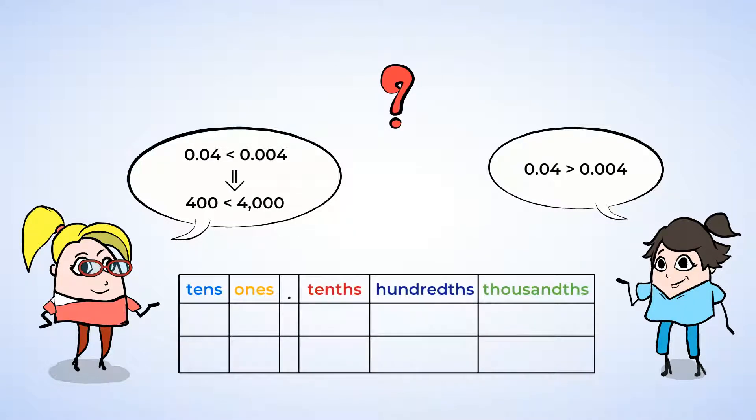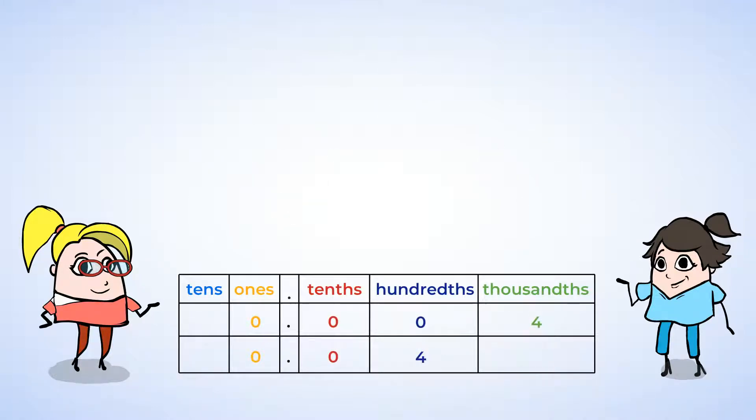We can begin by looking at the numbers in decimal form. When we line up the numbers by the decimal points, we can see that four thousandths has one more zero to the right of the decimal point. And here is a mighty hint. When looking at decimals, the number to the right of the decimal point, or the more zeros it has as place value holders, the smaller the decimal.